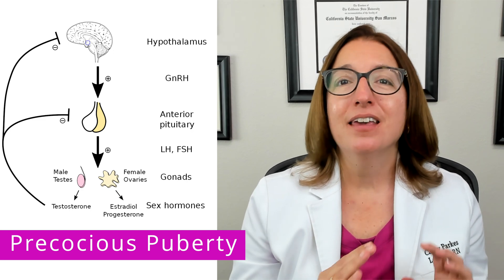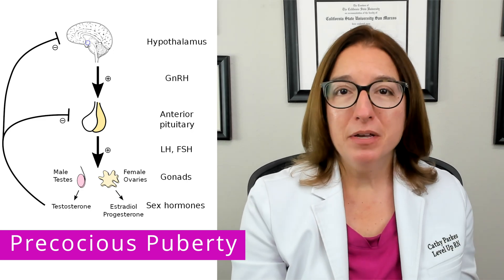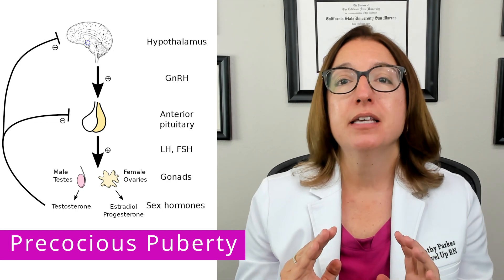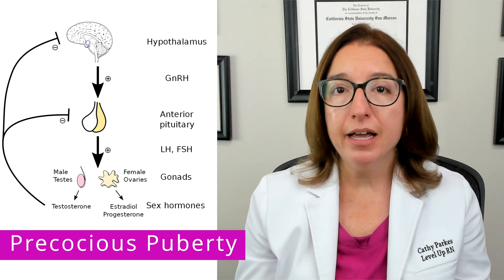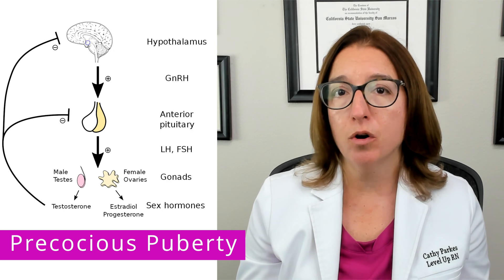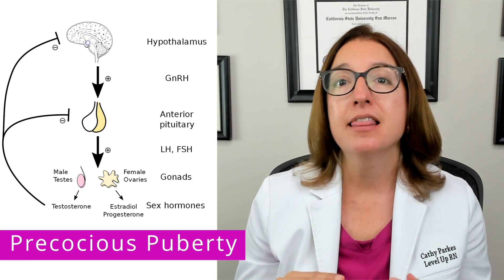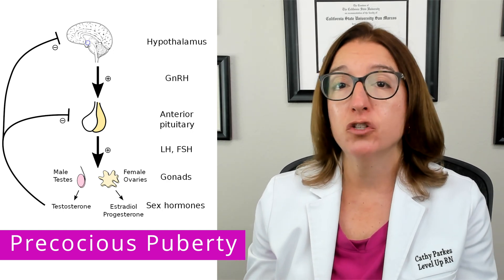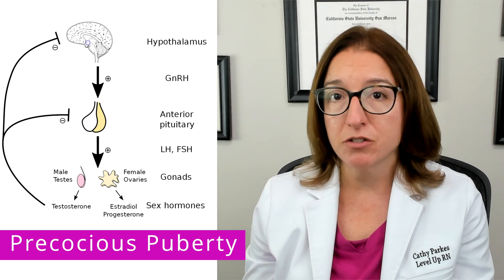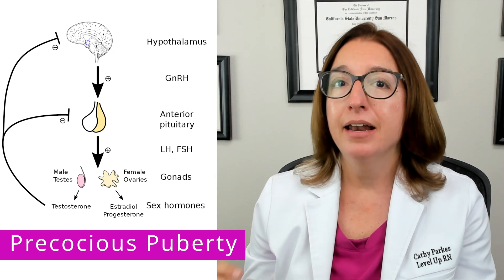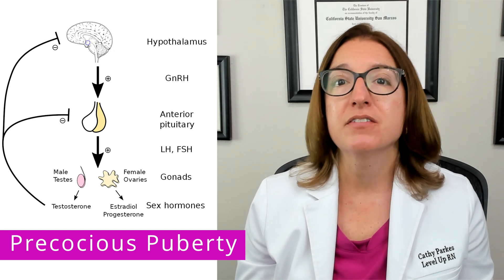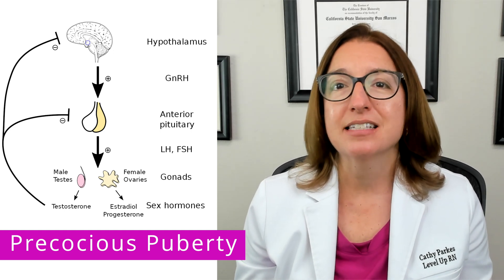As a review, the hypothalamus produces gonadotropin-releasing hormone, which causes the pituitary gland to produce luteinizing hormone and follicle-stimulating hormone. This then causes the ovaries to produce estrogen and the testicles to produce testosterone. It is primarily these hormones that cause the development of secondary sex characteristics.